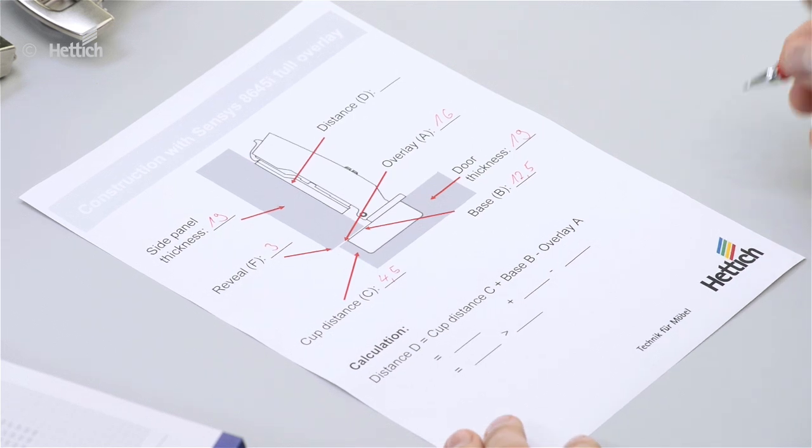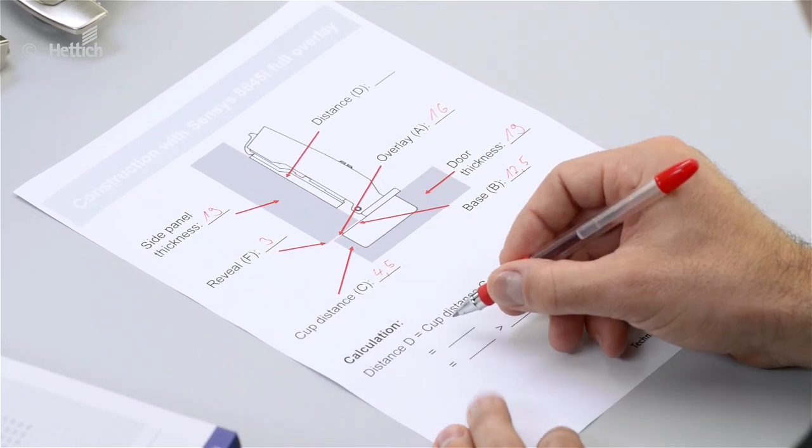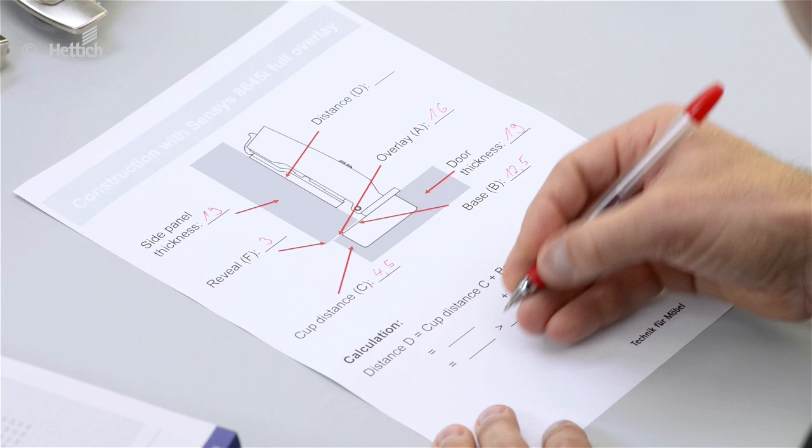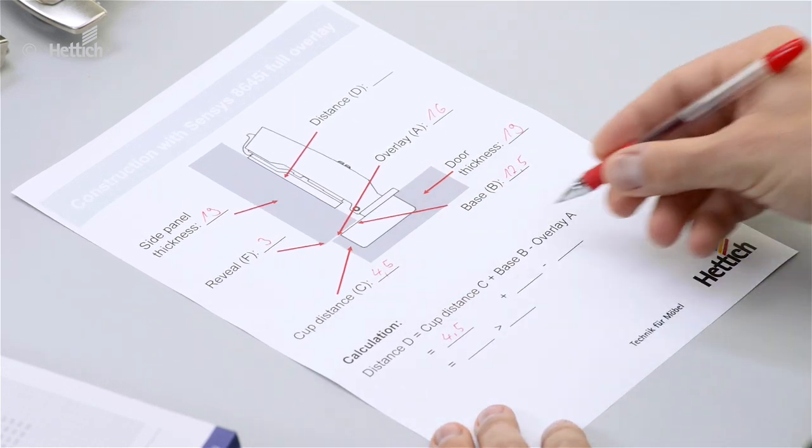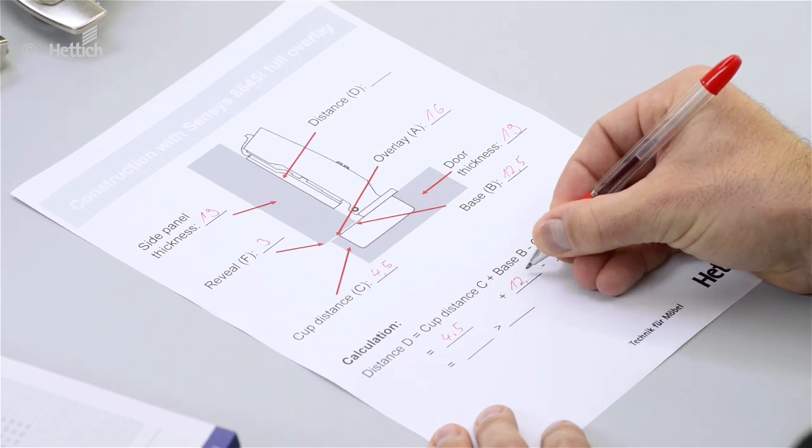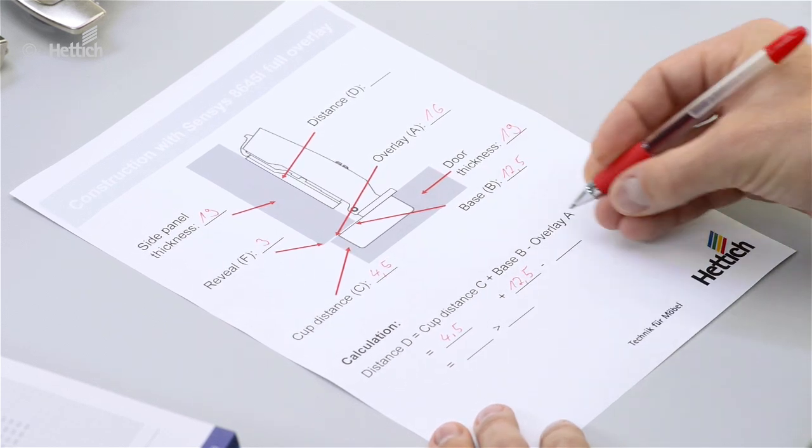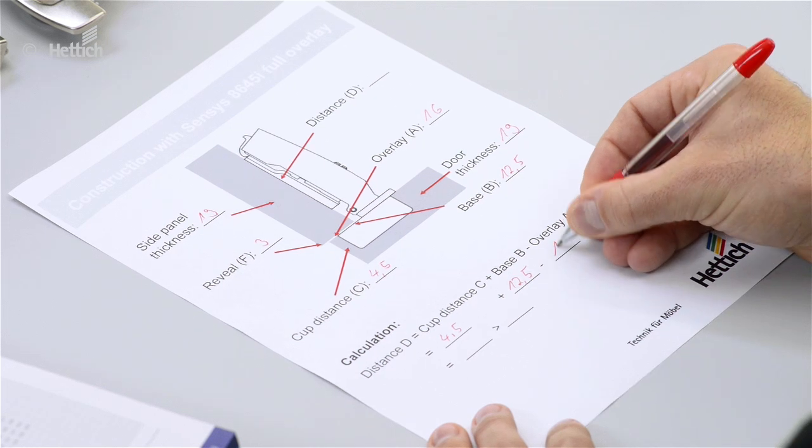Then we can go to the formula. So the cup distance C is 4.5mm, base B is 12.5mm, and the overlay is 16mm.